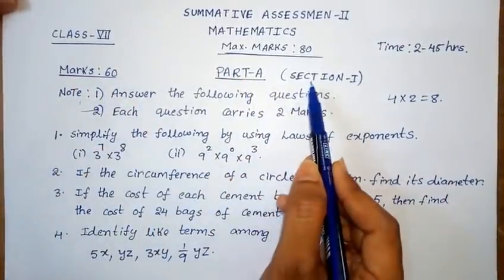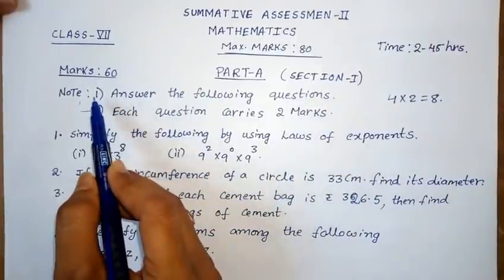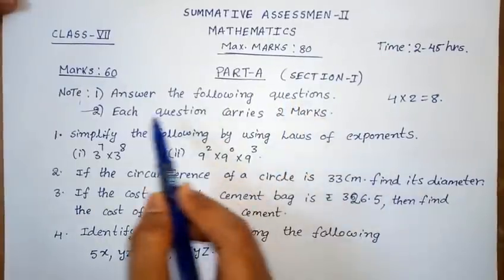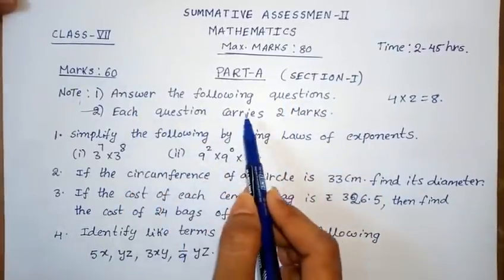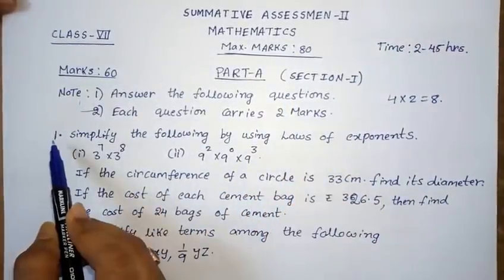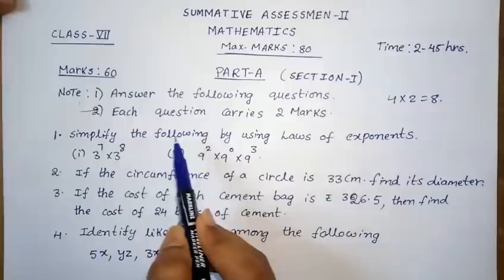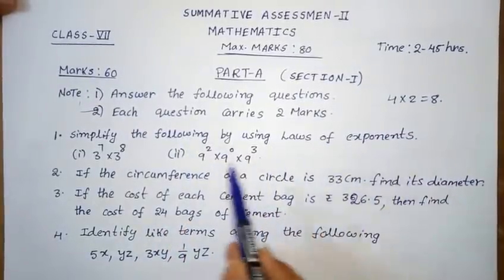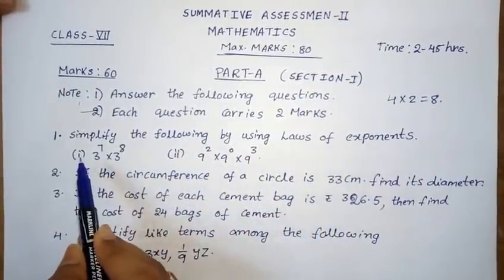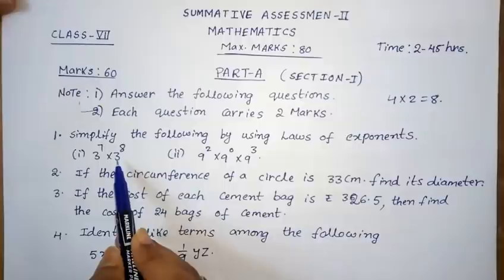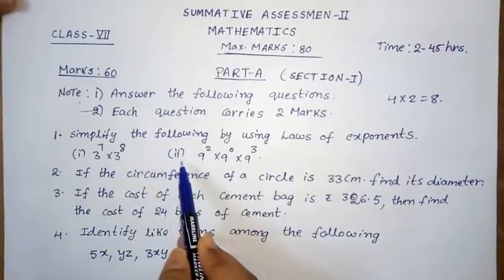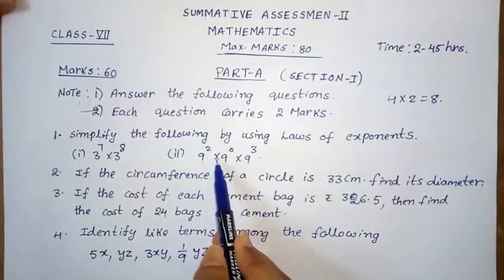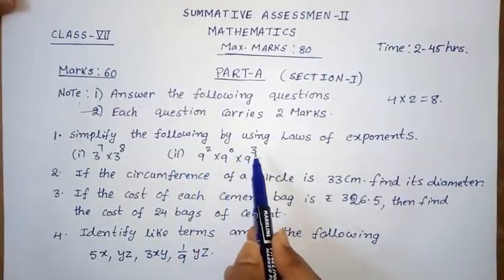Section 1: Answer the following questions. Each question carries 2 marks. First problem: Simplify the following by using laws of exponents. First one: 3 power 7 into 3 power 8. Second one: 9 power 2 into 9 power 0 into 9 power 3.